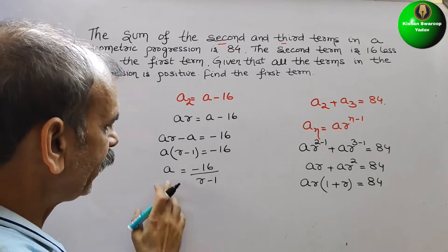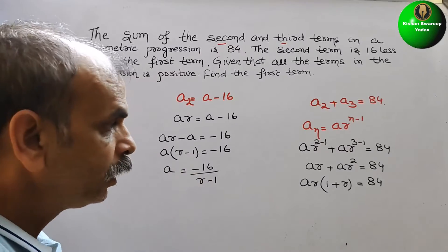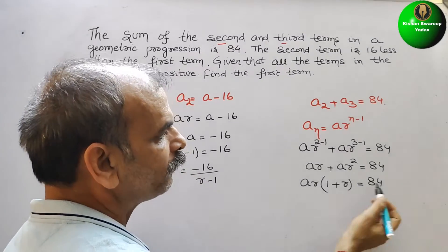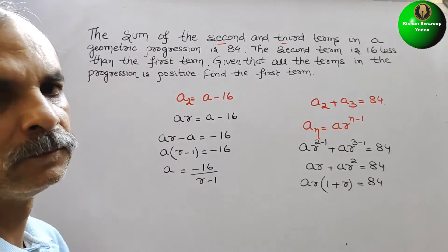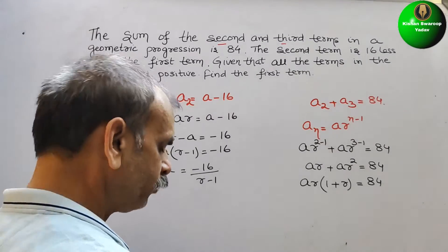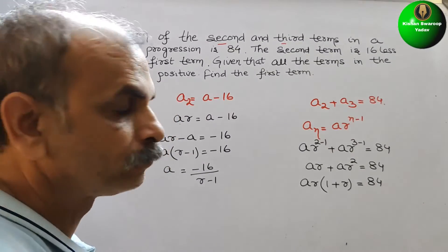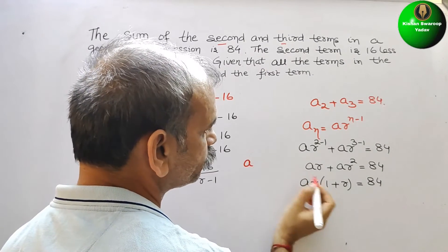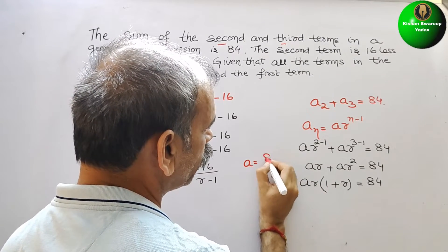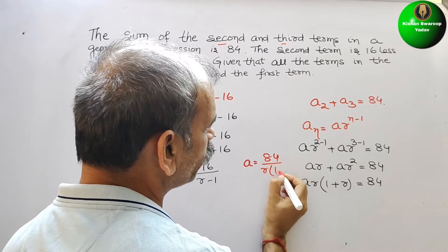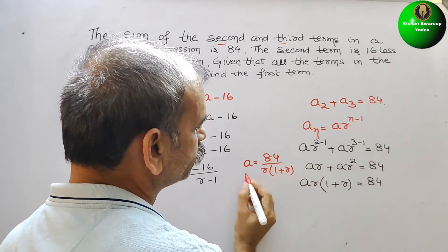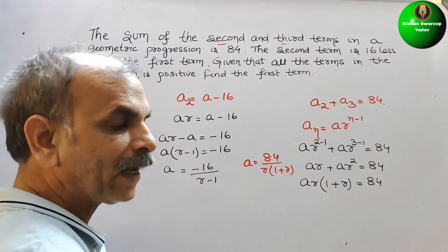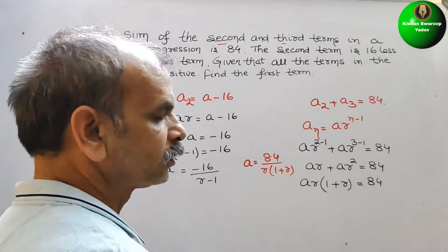Here we got a is this. If you solve this, what we will get? So here if you solve this, a is what? So we can say a is 84 by r times 1 plus r. So both are a, that means this is equal to this.